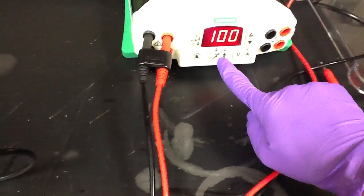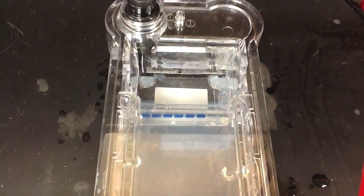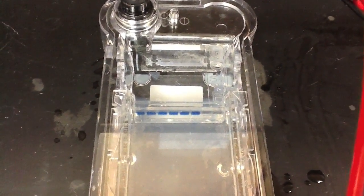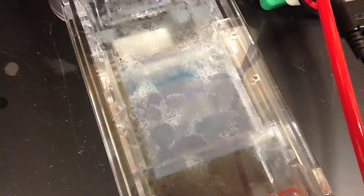We set the voltage to 100 volts and press the running man to make it run. When we do this, we actually see bubbles arise from one of the leads, letting us know that there is electricity passing through the TBE buffer and therefore through the gel.